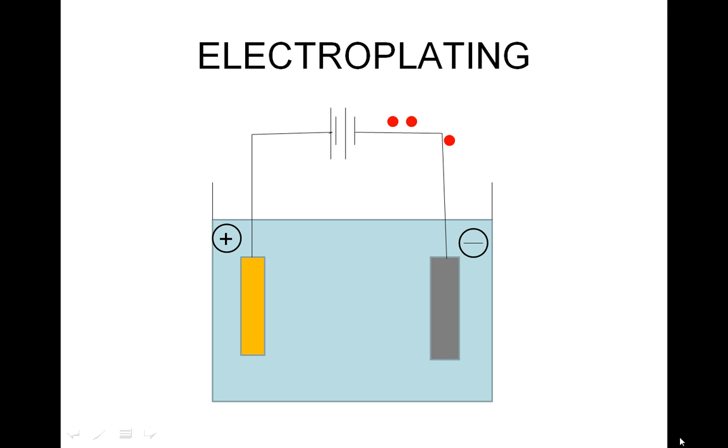The electrodes are then dipped in a solution containing gold ions. When the current is turned on, electrons start to flow from the battery to the cathode, giving it a negative charge.